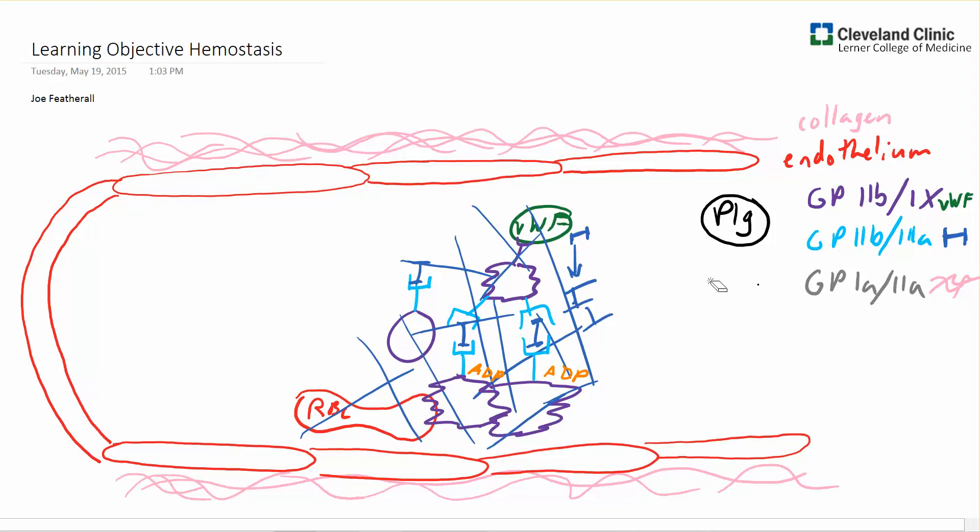And since clots can be dangerous and cause ischemia to important tissues, the body requires a way to get rid of this clot. And that is mediated by our plasminogen.